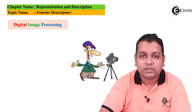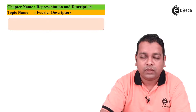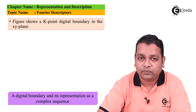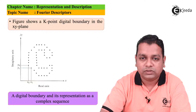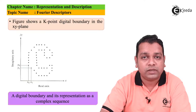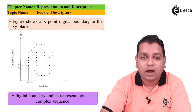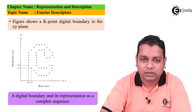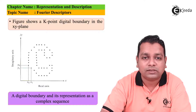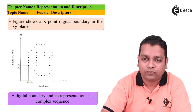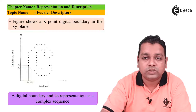We start discussing Fourier descriptors. First of all, let us visualize a figure that shows a K-point digital boundary in the xy plane — a digital boundary and its representation as a complex sequence. On the horizontal axis we have marked x, the real part, and on the vertical axis the imaginary part jy. The markings on the real axis are x0, x1, and the corresponding markings on the other axis are y0 and y1.